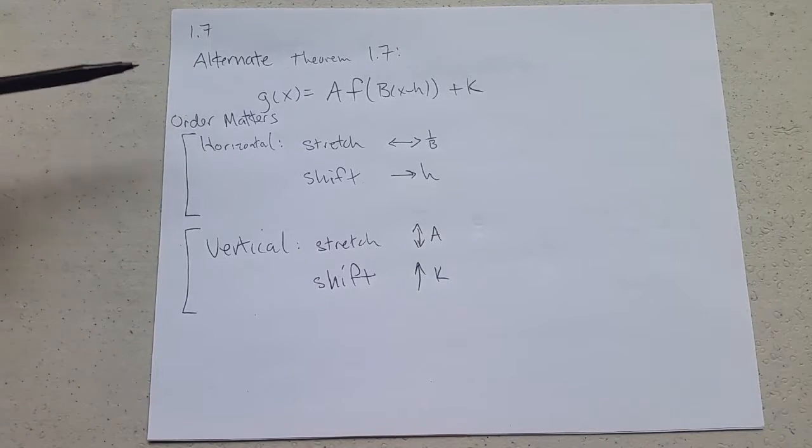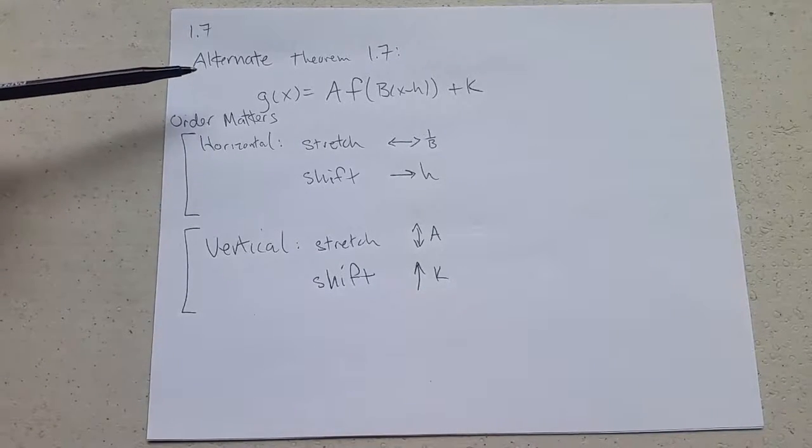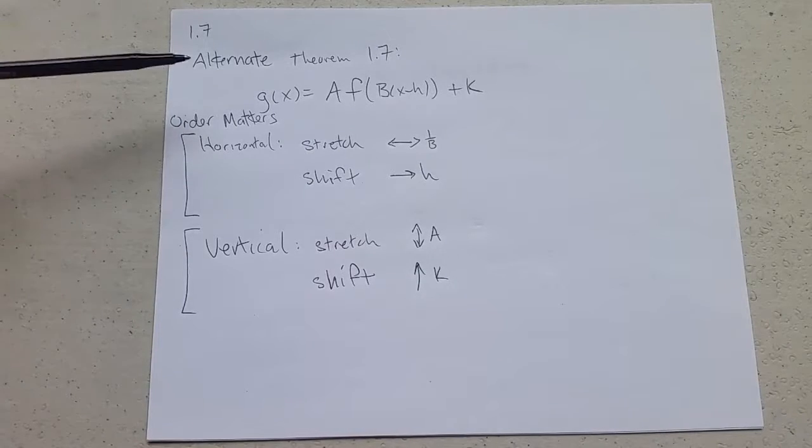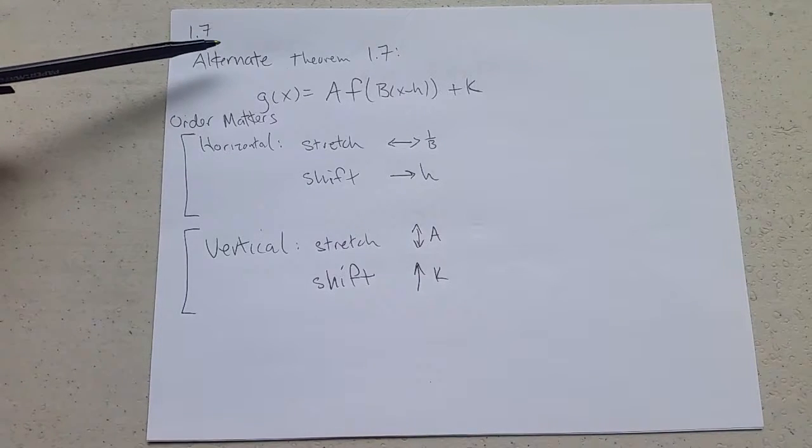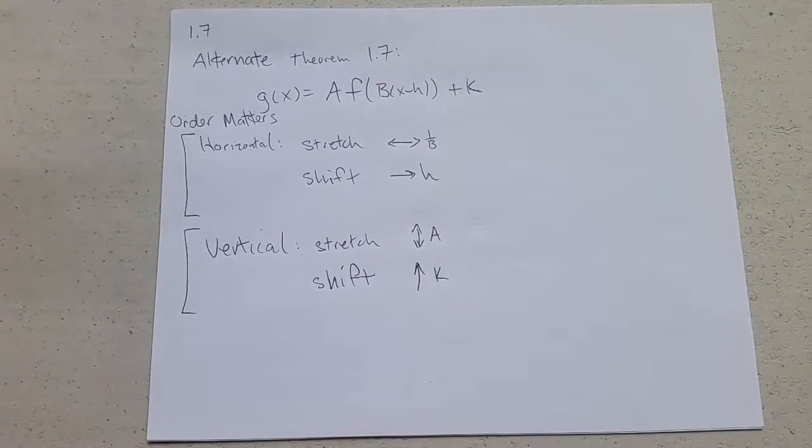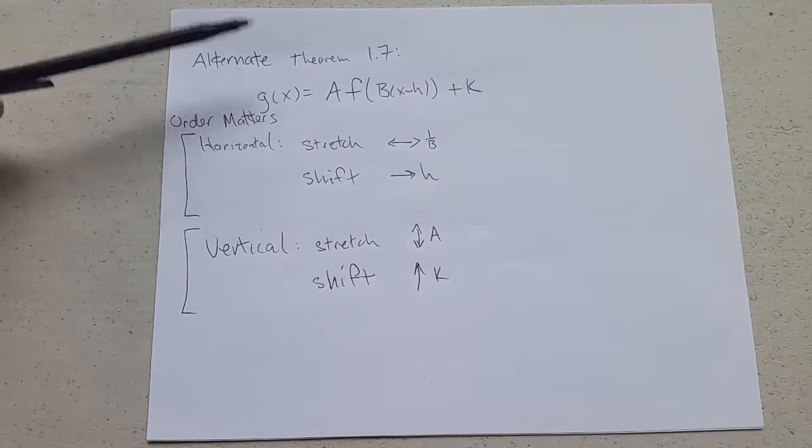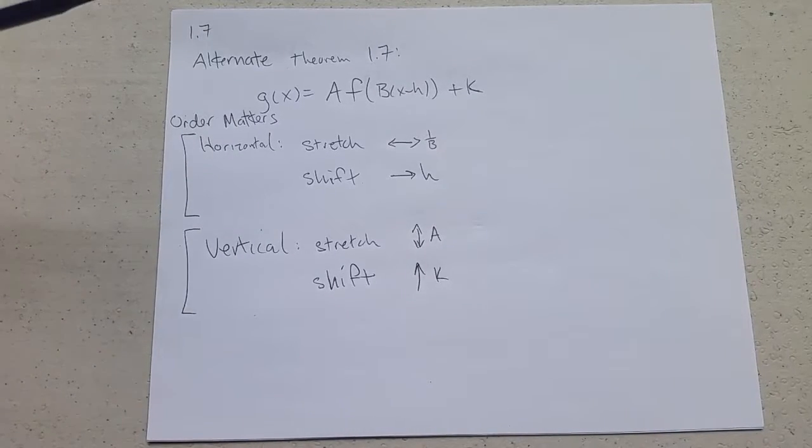Theorem 1.7 in the book goes through how to apply the four transformations in the correct order. If you apply them out of order, you won't get the correct final graph. How can you check the final graph? You can plug in points, and we'll do that on the next example.